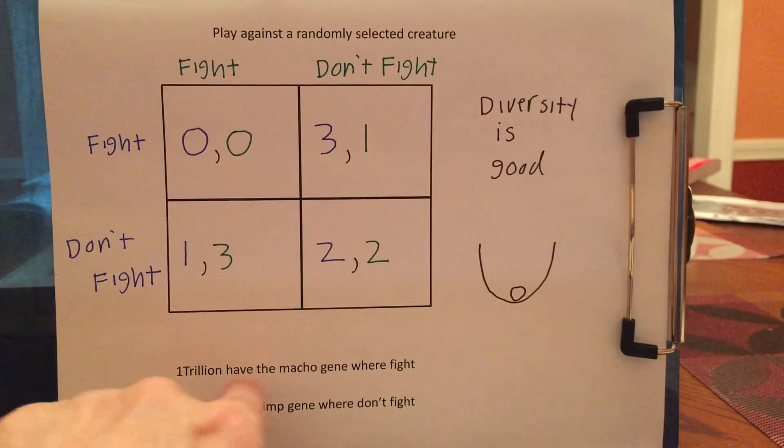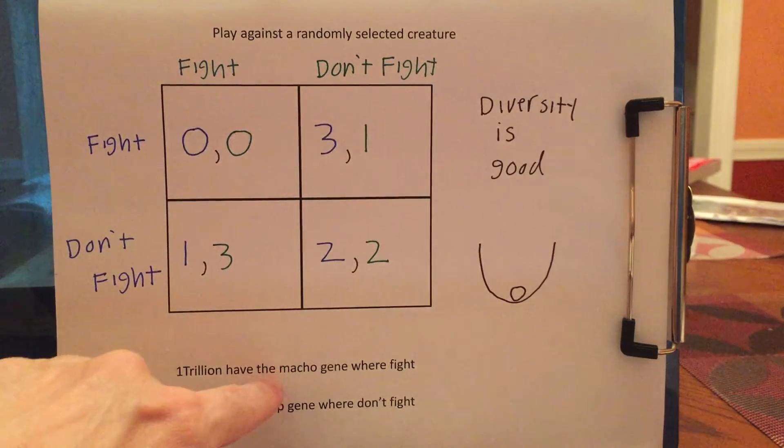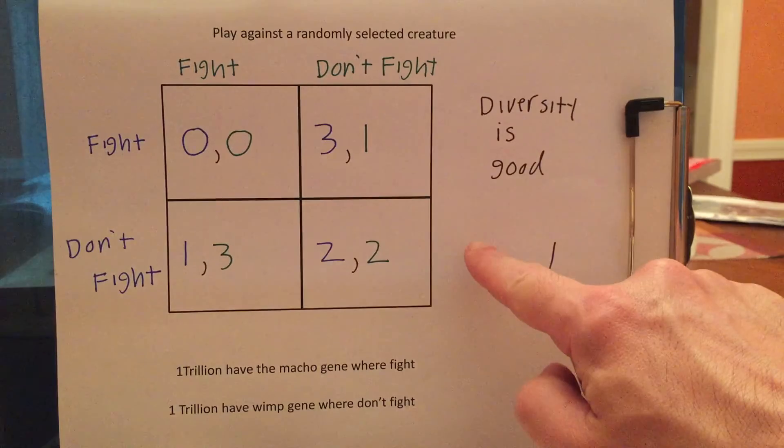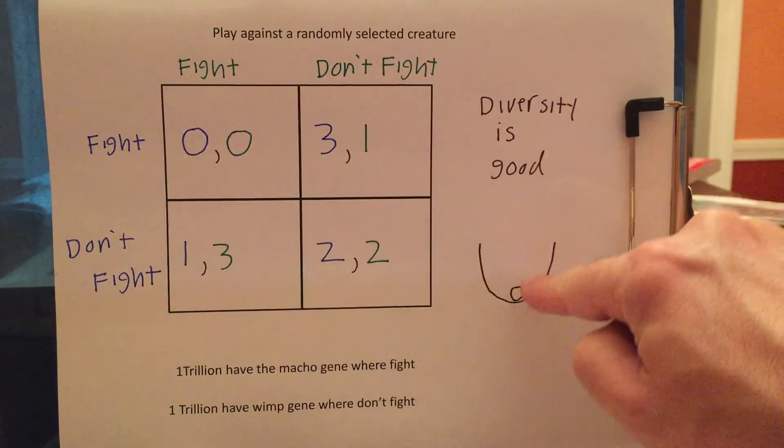That's sort of the equivalent of saying there's 1 trillion have the macho gene and 1 trillion have the wimp gene. Basically, you play against a randomly selected opponent. There's a 50% chance you'll play against someone who's going to fight you because they're macho and a 50% chance you'll play against someone who won't fight you.